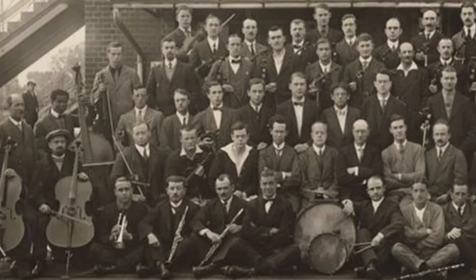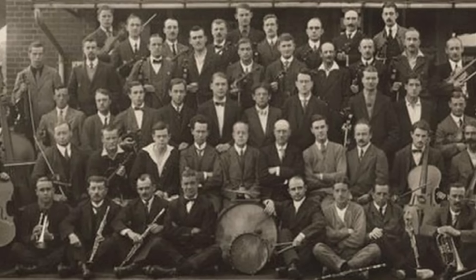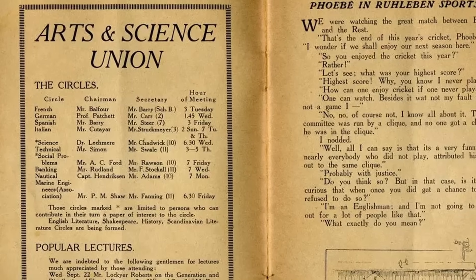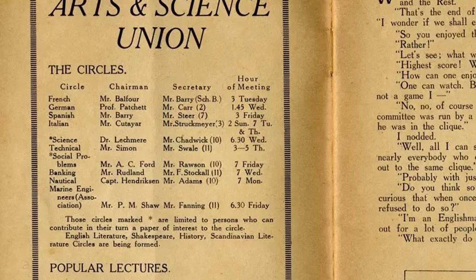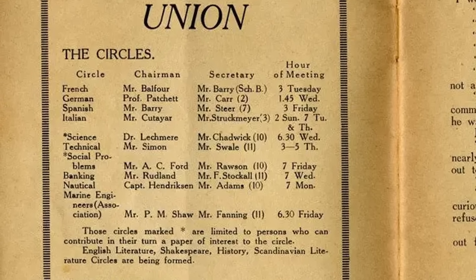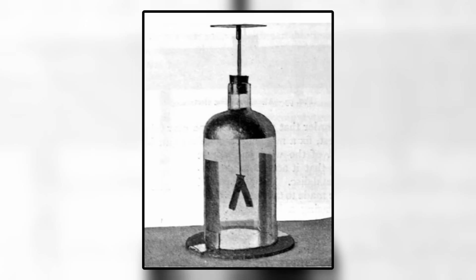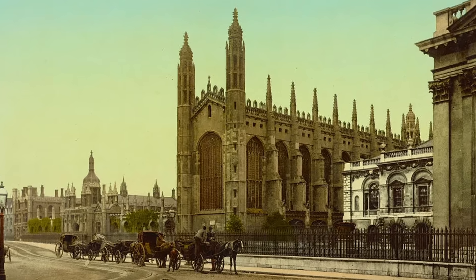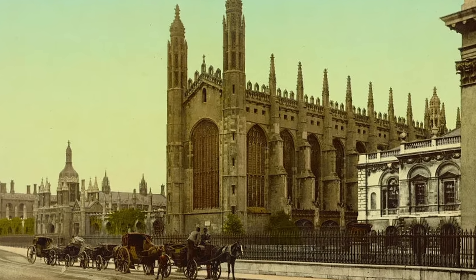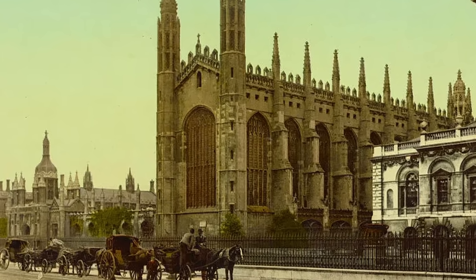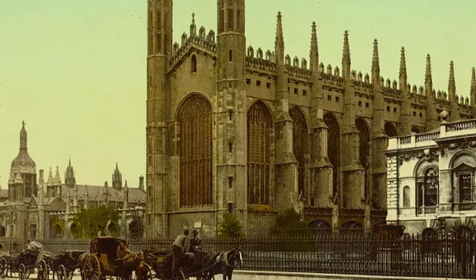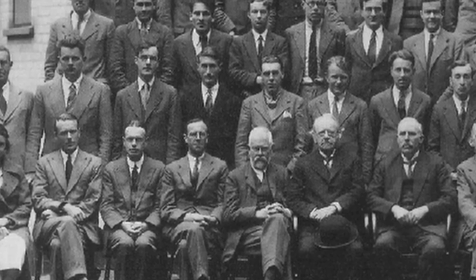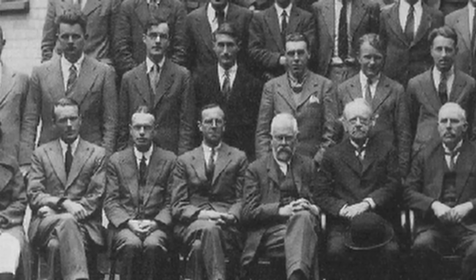He was imprisoned in a camp for civilians of Allied powers at Ruhleben. Although detained, Chadwick was not restricted from pursuing his passion for science. He and a group of fellow detainees formed a science club where they lectured to one another and, with permission from the guards, set up a small lab. He managed to build an electroscope with some wood and tin foil and experimented with radioactive toothpaste being sold in Germany at the time. After the war, James returned to England, completed his education under Rutherford, and received his doctorate from Cambridge in 1921. Two years later, he was appointed assistant director of the Cavendish Laboratory under Rutherford, following in the footsteps of many greats who came before him.